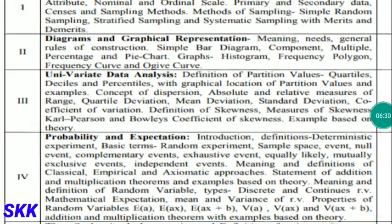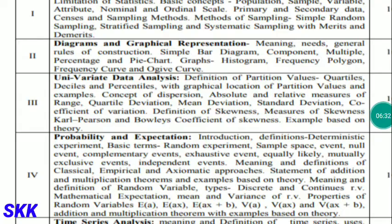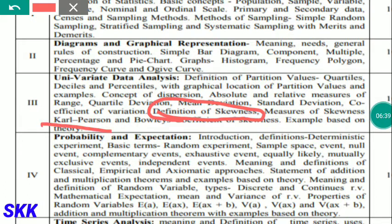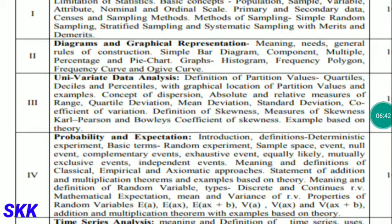After measures of dispersion, you will also study variation and skewness, specifically measures of skewness. So altogether, the third unit covers partition values, measures of central tendency, measures of dispersion, and measures of skewness.